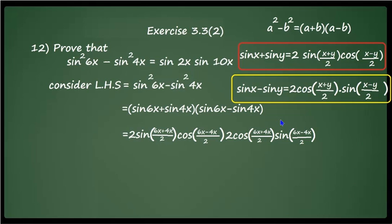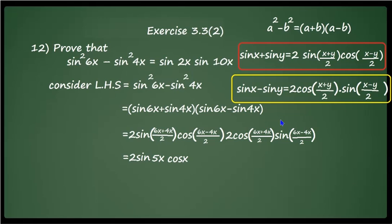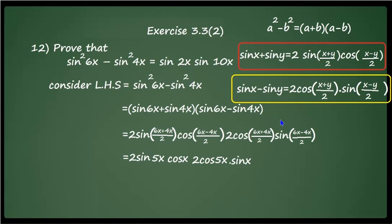The next step is simplification. We get 2 sin 5x (since (6x+4x)/2 = 5x) · cos x (since (6x−4x)/2 = x) · 2 cos 5x (since (6x+4x)/2 = 5x) · sin x. Rearranging, we group the terms as: (2 sin x · cos x) · (2 sin 5x · cos 5x).